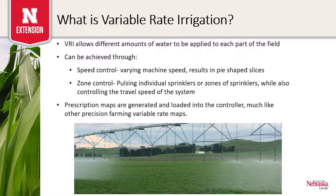The other method is zone control, which can be achieved in a few different ways: controlling each individual sprinkler, or having different zones along the machine such as each span being a zone, or multiple zones per span. Part of this is driven by cost. Individual sprinkler zone control tends to be more expensive because we have more equipment. Having zones by span or multiple zones per span tends to be a little less expensive because there is less equipment involved.